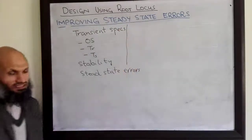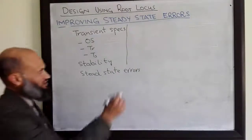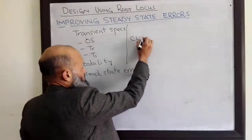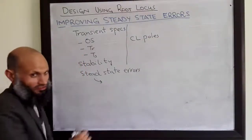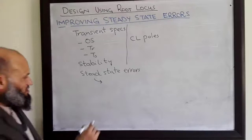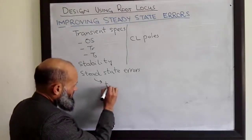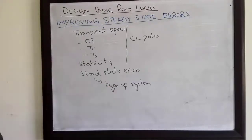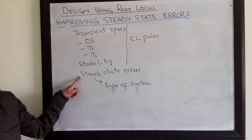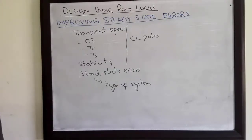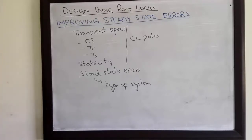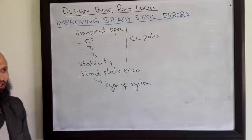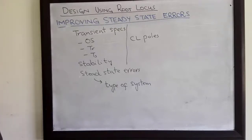The transient characteristics and stability are mainly determined by the closed-loop poles of the system, and steady state error can be characterized in terms of the type of the system. In today's lecture we shall learn how to improve the steady state error for a particular system. By improving, we mean we want to have as small a steady state error as possible — ideally, zero steady state error.